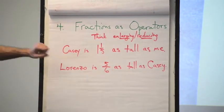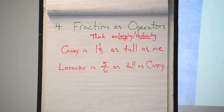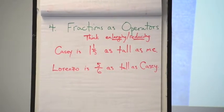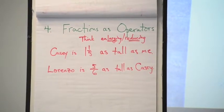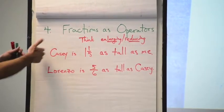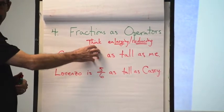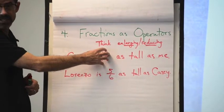For example, Casey is one and one-fifth as tall as me. Casey's a tall guy. This is a rough guess. So notice here, I just made a statement. I'm taking a number. Here I wrote it as, by the way, as a mixed number, right?